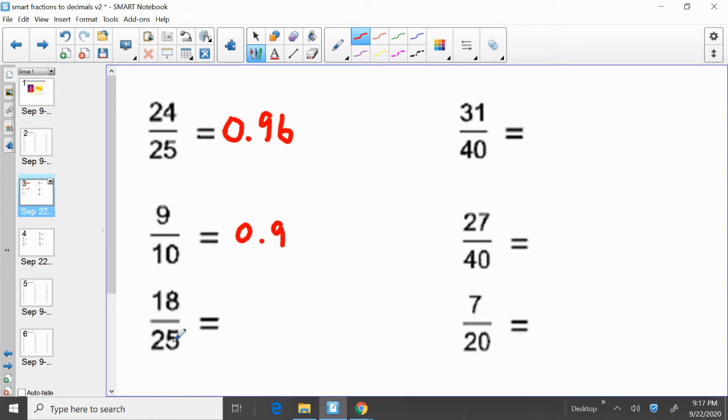Eighteen over twenty-five. So you take eighteen, divide it by twenty-five. Eighteen twenty-fifths, eighteen divided by twenty-five is zero point seventy-two. So eighteen twenty-fifths equals zero point seventy-two. And again, it's very simple. Take your numerator, divide it by your denominator.